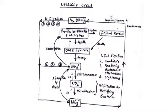We all know that nitrogen gas is present all over the atmosphere, but we cannot intake nitrogen the way we intake oxygen. Nitrogen in the atmosphere is present in N2 form. There are four ways by which nitrogen may be fixed, either biologically or synthetically.